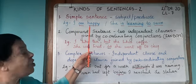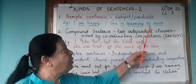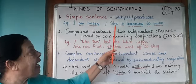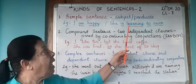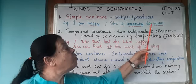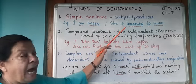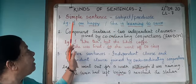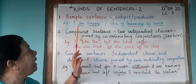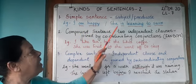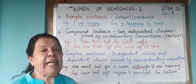Even though it's got just three words, it gives me complete sense. Another example: She is learning to swim. 'She' is again the subject, 'is learning' is the verb, and 'is learning to swim' is the predicate. So these two sentences have just one subject — 'I' and 'she' — and one predicate each. 'Am happy' is the predicate in the first sentence; 'is learning to swim' is the predicate in the second sentence.